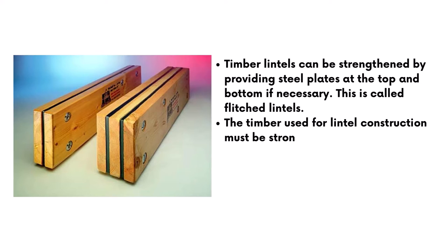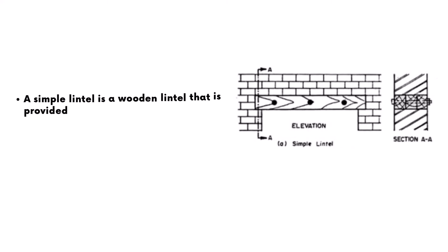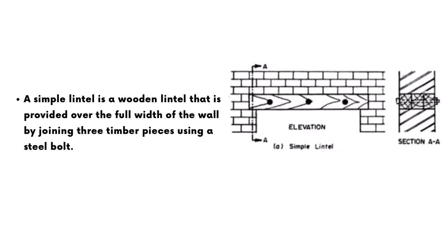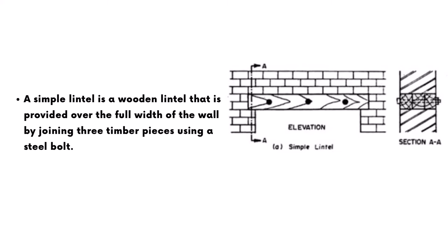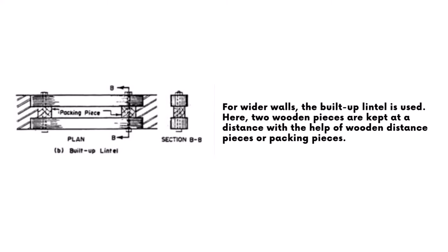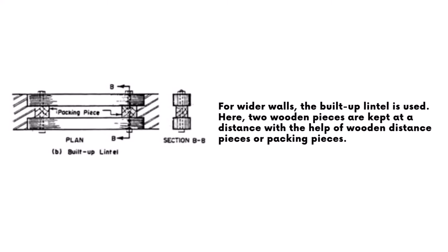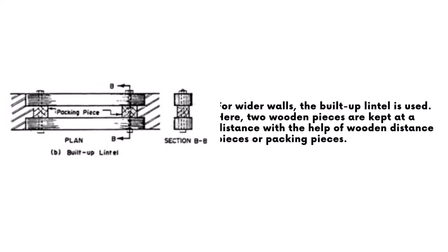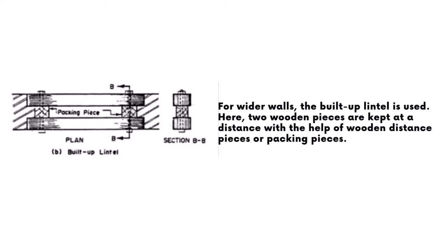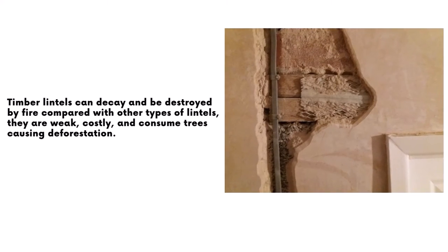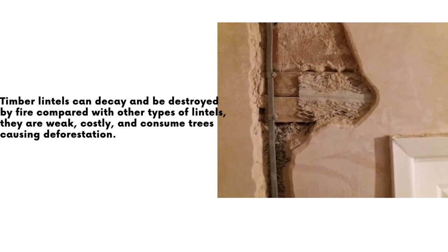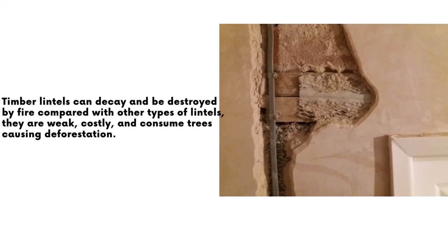A timber lintel is provided over the full width of the wall by joining three timber pieces using a steel bolt. For wider walls, built-up lintels are used, where two wooden pieces are kept at a distance with the help of wooden distance pieces or packing pieces. Timber lintels can decay and can be destroyed by fire. Compared with other types, they are weak and costly, and they consume timber which causes deforestation.